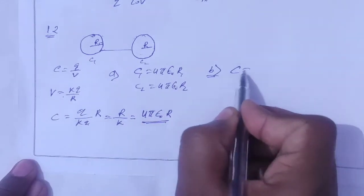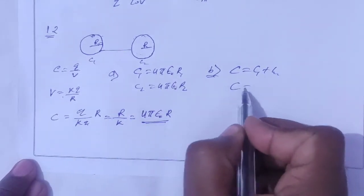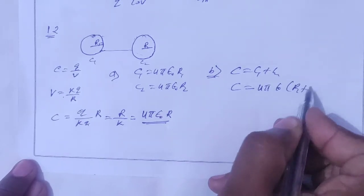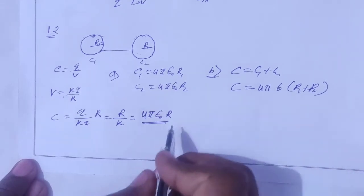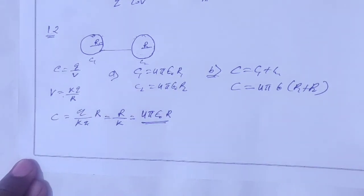For parallel combination, equivalent C equals C1 plus C2. Here we solve: C equals 4π epsilon zero r1 plus 4π epsilon zero r2 equals 4π epsilon zero times (r1 plus r2). This is the equivalent capacitance and the combination is parallel combination.